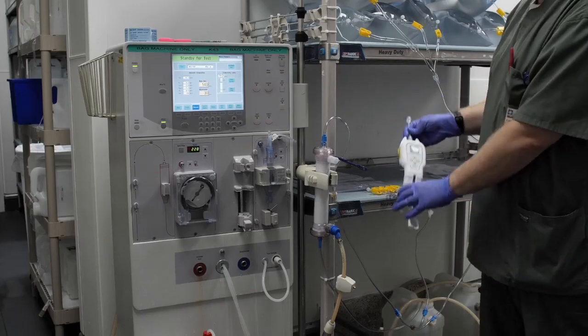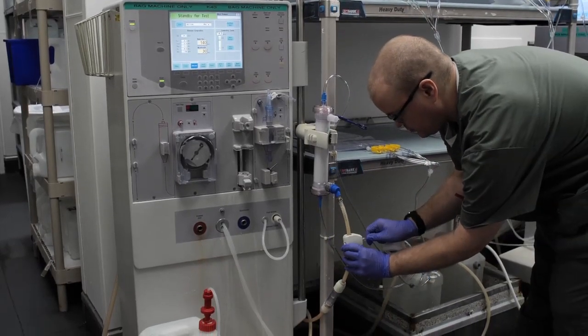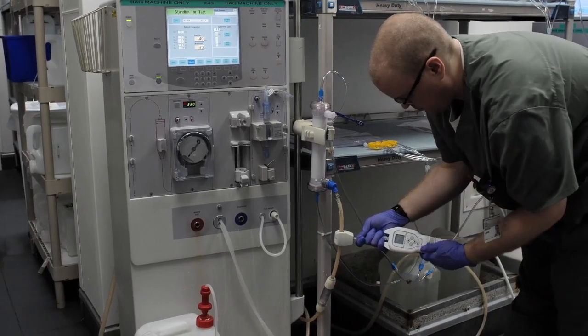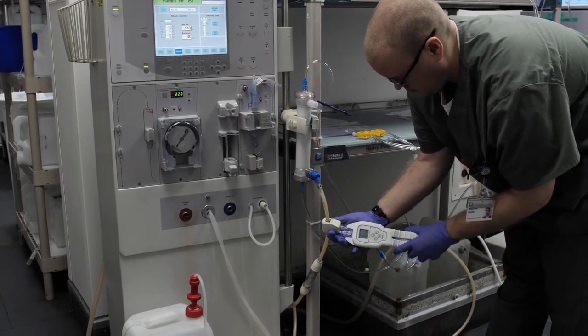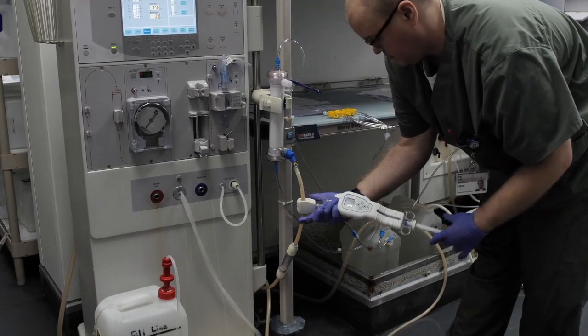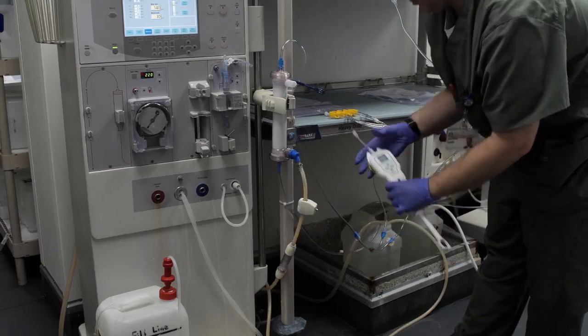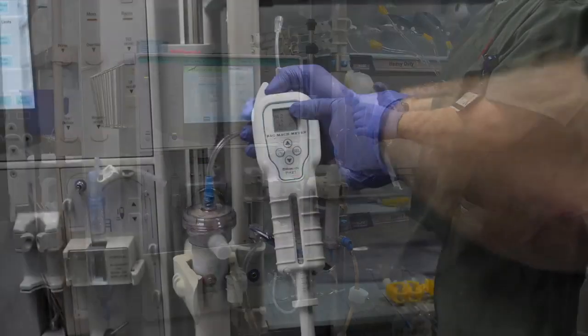Step 15: Then verify conductivity using the Phoenix meter. Do this by collecting a sample of the fluid coming out of the venous line, then sample with the Phoenix meter and ensure the pH and conductivity are in the acceptable range.